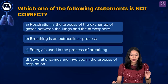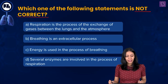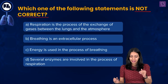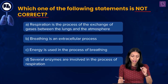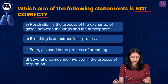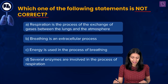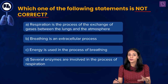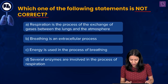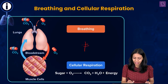Now let's look at the next question: which one of the following statements is not correct? Option A: respiration is the process of exchange of gases between the lungs and the atmosphere. Option B: breathing is an extracellular process. Option C: energy is used in the process of breathing. Option D: several enzymes are involved in the process of respiration. Most people equate breathing with respiration, but breathing does not equal respiration.